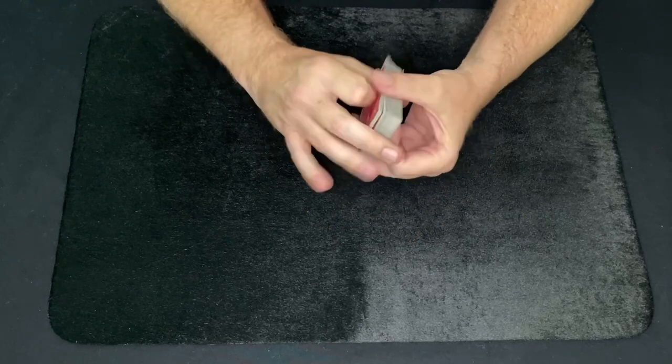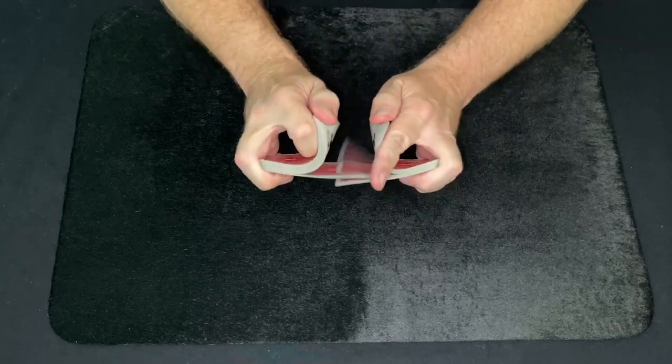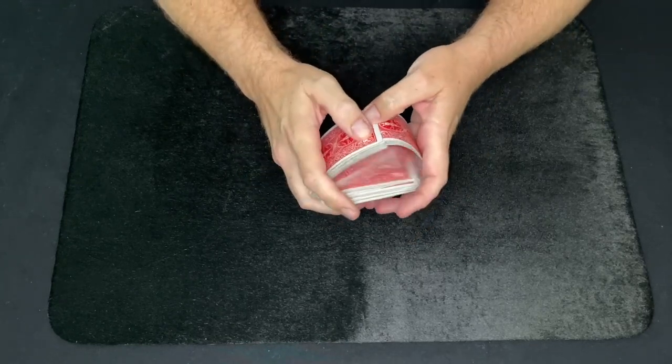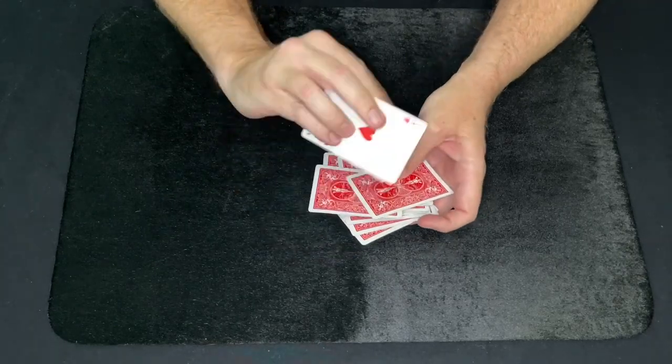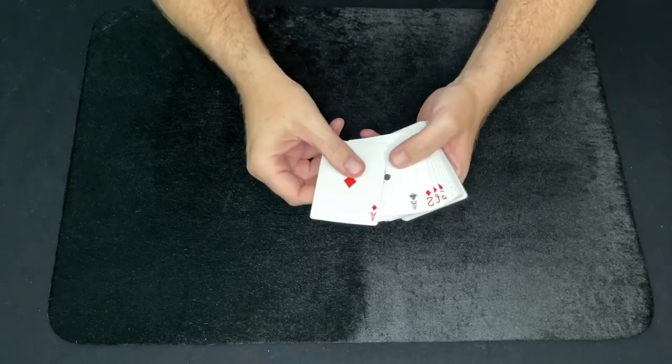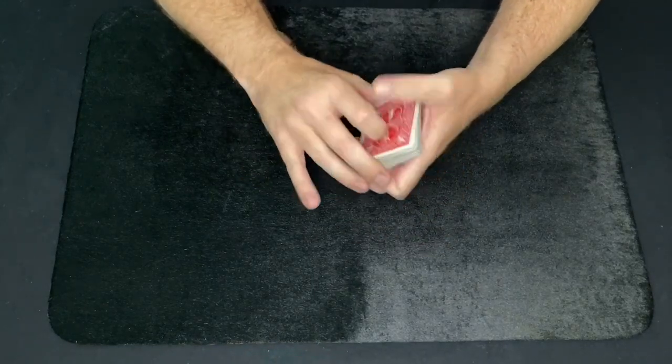So you're going to shuffle over and over again, and you're just keeping the top two. See, I missed it, so you've got to practice a little bit. I missed the top two. Keep the top two on the top, and the bottom two on the bottom. And that's it.